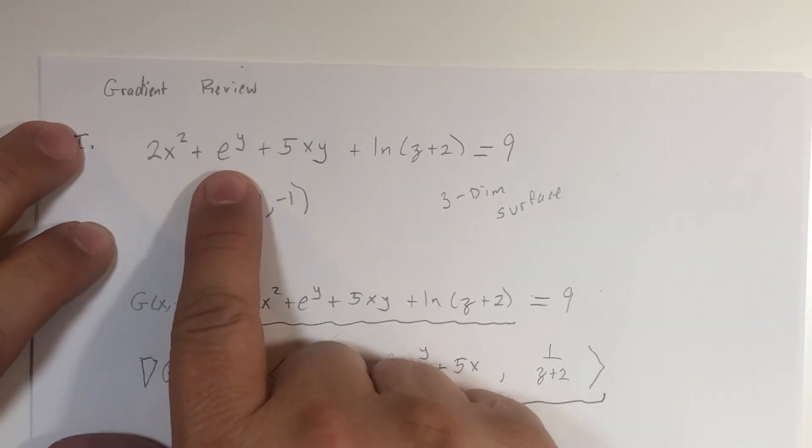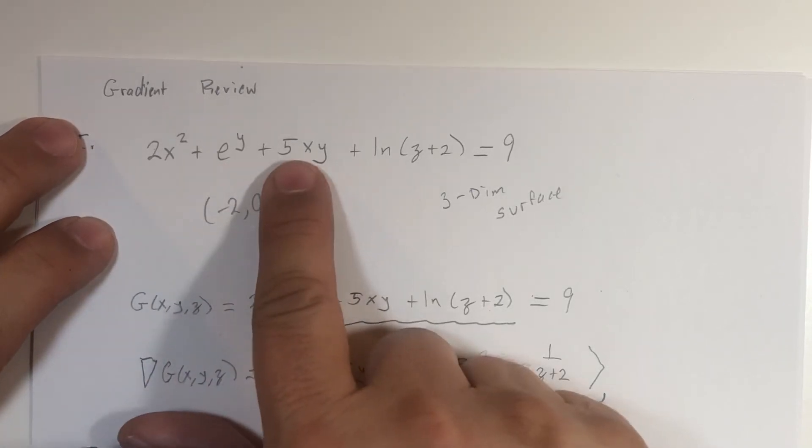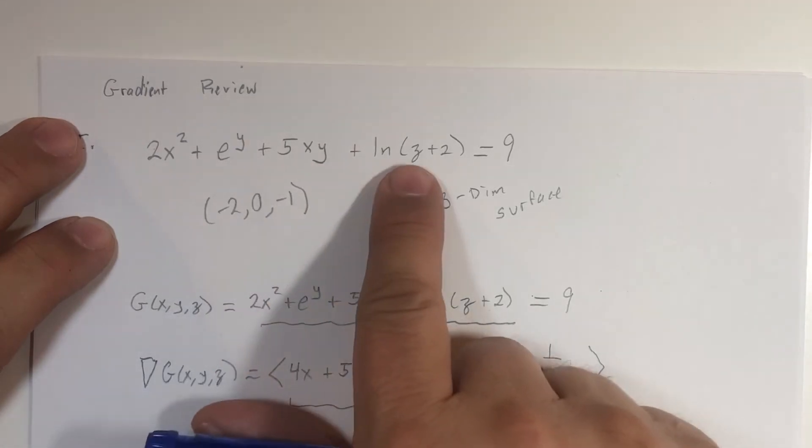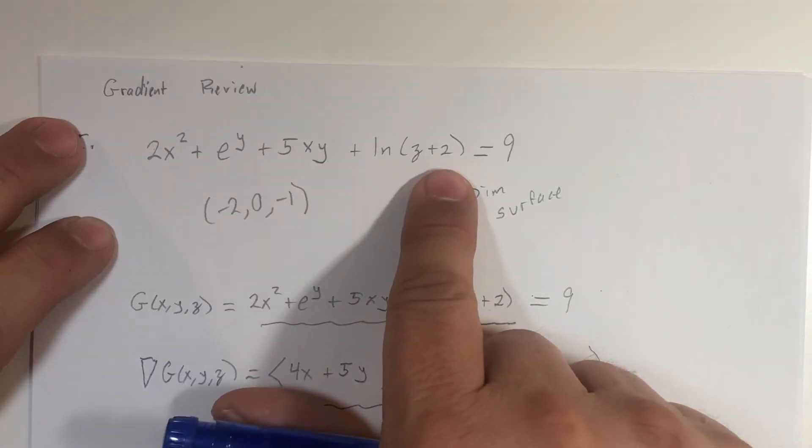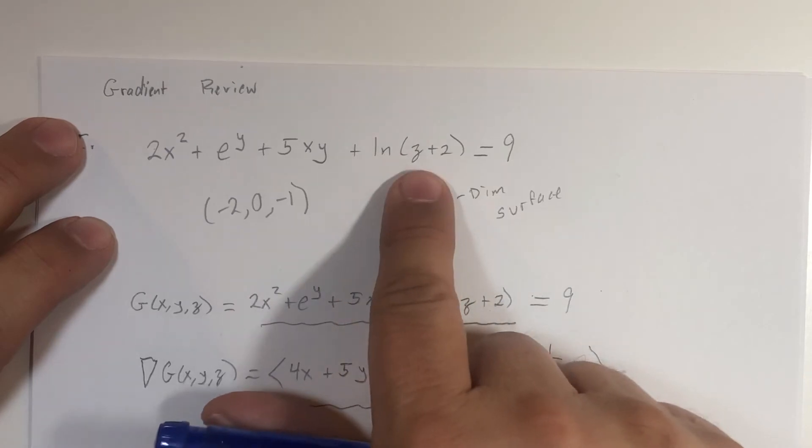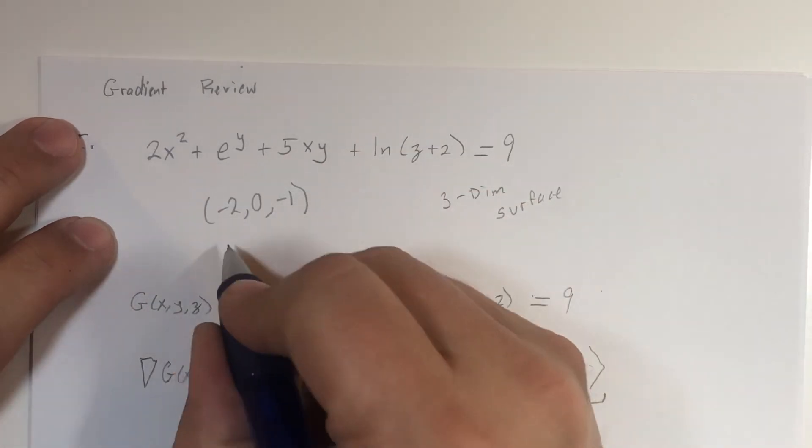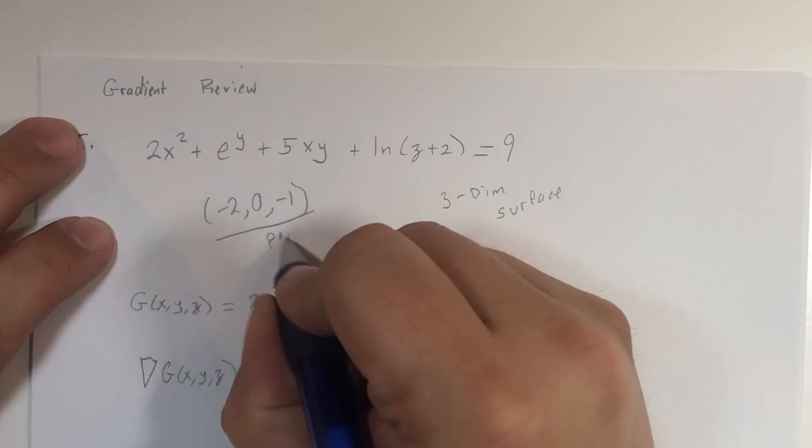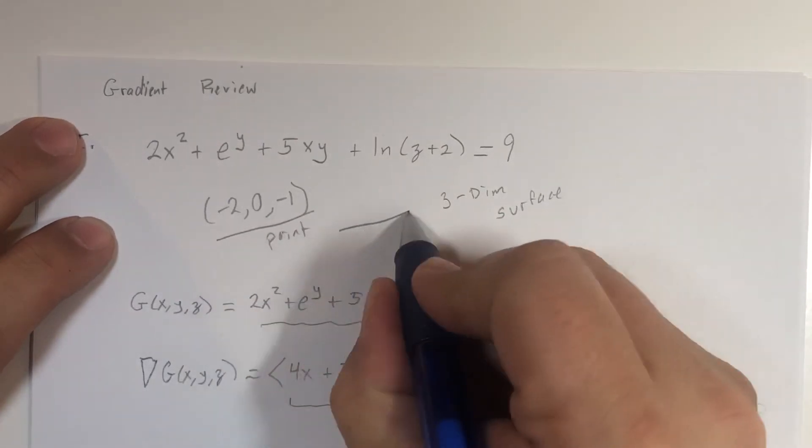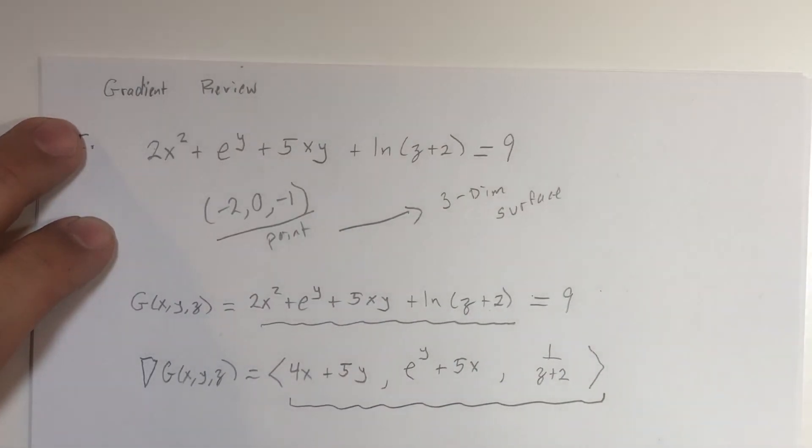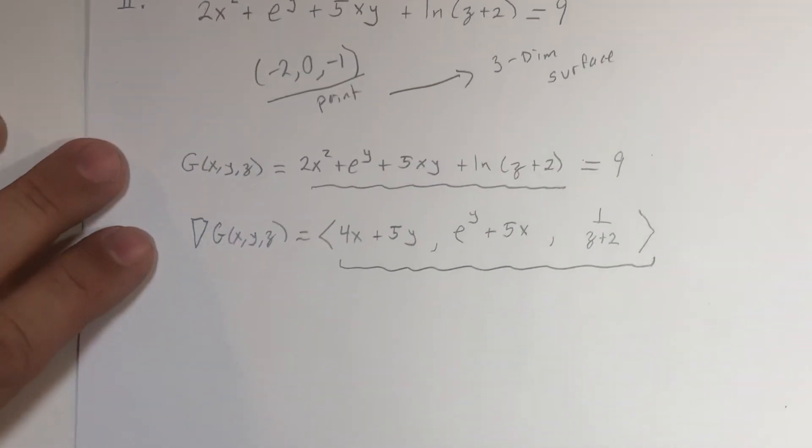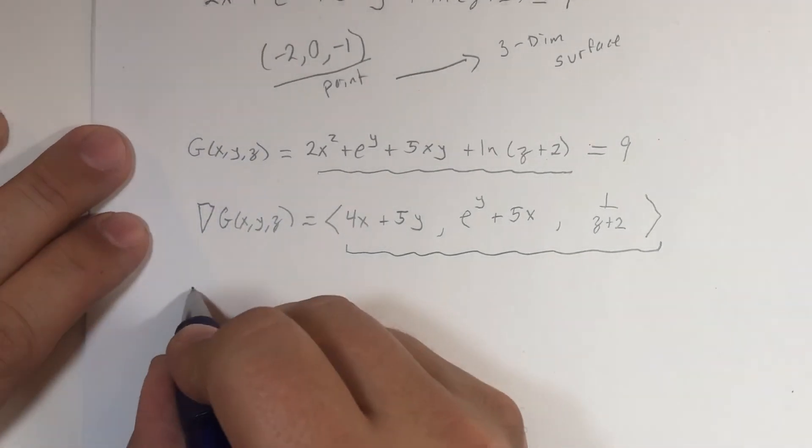e^0 is 1, so 8 and 1 is 9. 5 times 0 is going to be zero, and then -1 + 2 is positive 1, but the natural log of positive 1 is zero. You end up with 9 = 9, so here is a point that's on that three-dimensional surface.